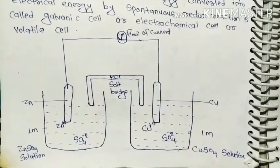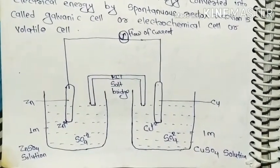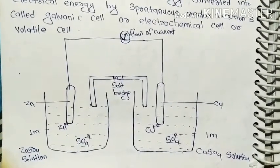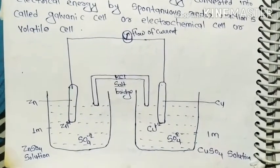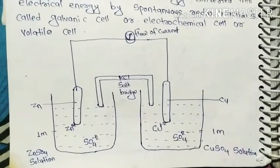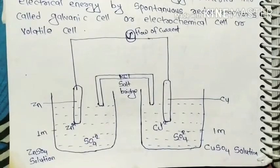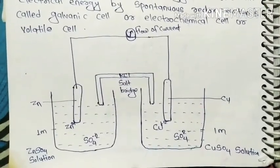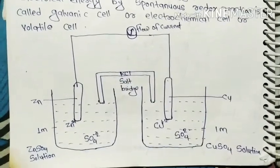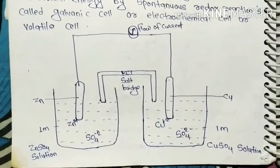Zinc-sulfide solution and copper-sulfide solution are in two containers. Zinc-sulfide solution is anode and copper-sulfide solution is cathode. In anode, see which electrode is? Zinc electrode. And in cathode, copper electrode. So you can see that both are connected.